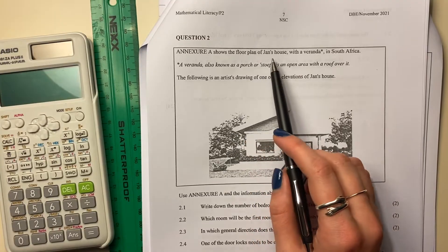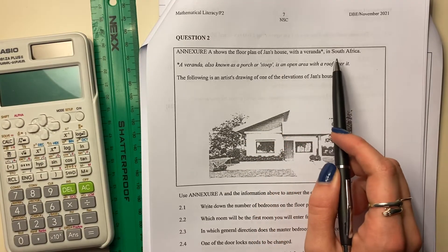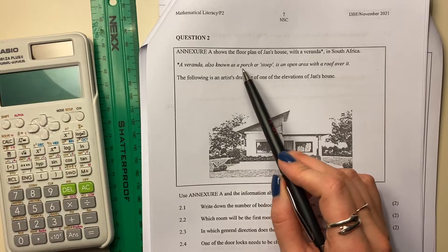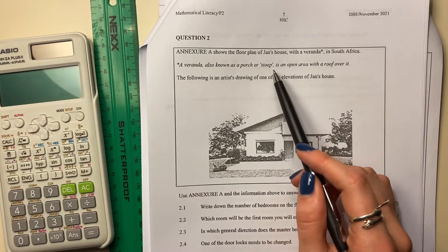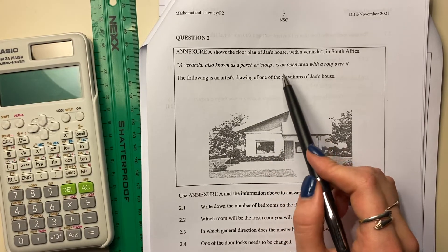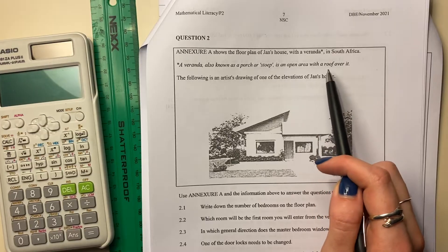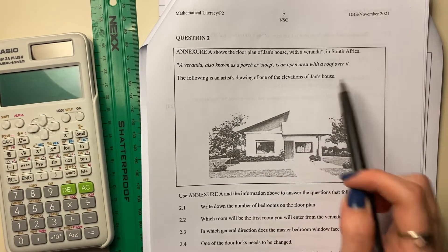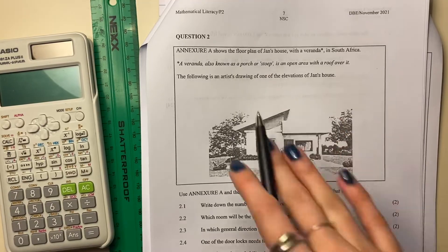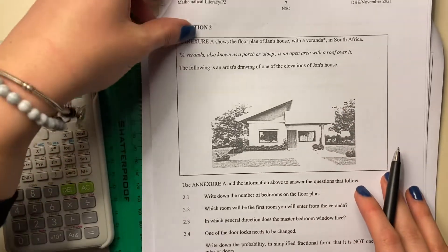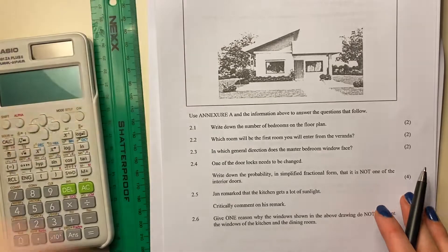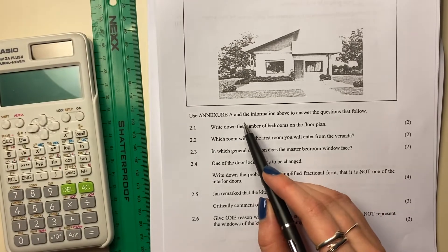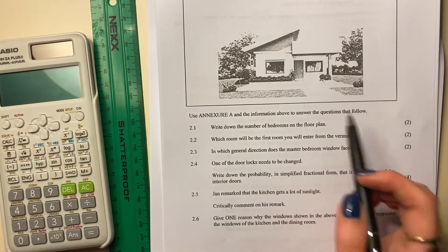Annexure A shows the floor plan of Jan's house with a veranda in South Africa. A veranda, also known as a porch or a stoop - tell me you're South African without telling me you're South African - is an urban area with a roof over it. The following is an artist's drawing of one of the elevations of Jan's house. So there's the drawing of the house. Let's see what the questions ask us. It says, use Annexure A and the information above to answer the questions that follow.